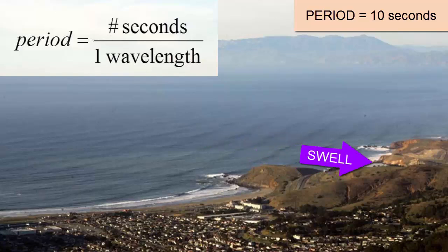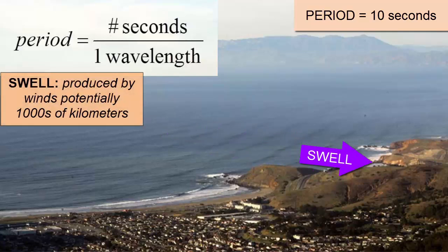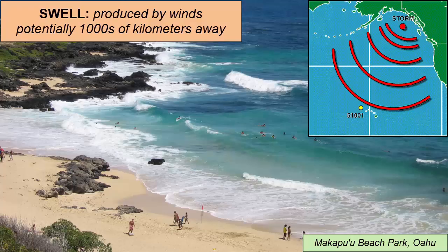Where are these waves coming from? There's no local wind producing them. However, thousands of miles away there is a storm system — perhaps a hurricane, perhaps a winter storm — and the waves that are kicked up in that area are called chop or sea. When they propagate outward from that storm area, they separate into regular sets of wave trains, all waves within which have the same height, wavelength, and period. These ordered groups or sets are called swell, and they travel thousands of miles to our beaches.